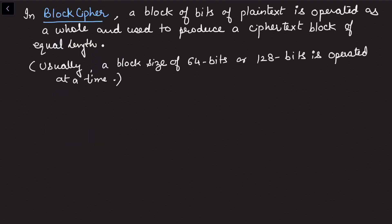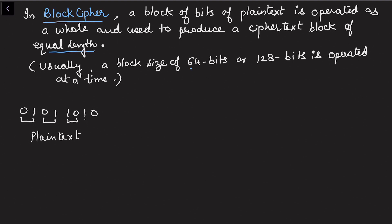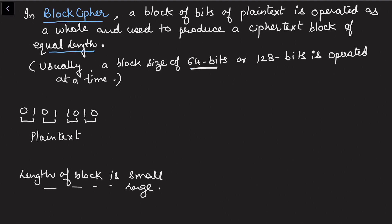In block cipher, a block of bits of plain text is operated as a whole to produce a cipher text block of equal length. We generally use a block size of 64 bits or 128 bits. If the block length is too small, it is easy to break — less security. But the block length should not be too large either, because that takes a lot of time to encrypt.